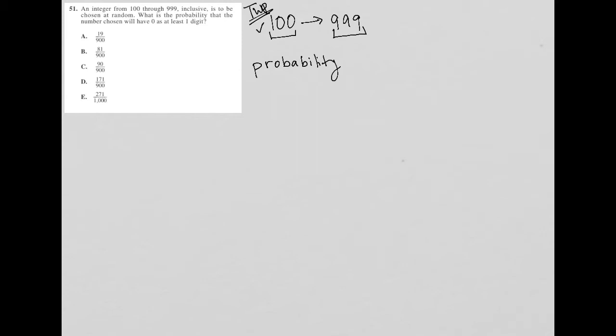So this is the first thing I wrote. So probability for this test, I want you to always translate this word probability as a fraction where the numerator is what you want, and the denominator is the total that you're choosing from. So what is the probability that the number chosen will have zero as at least one digit?